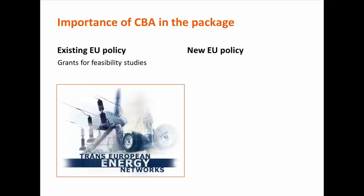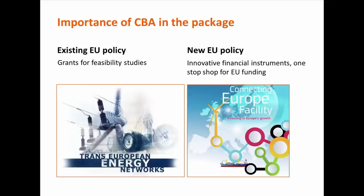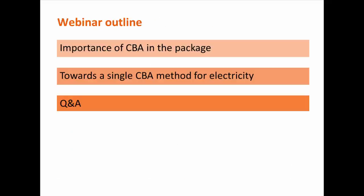The existing EU policy also included EU funding for priority projects. In the past we had mainly grants for feasibility studies, about 200 million per year. In the new policy we will have the Connecting Europe Facility, which includes not only more money — we are talking about an order of magnitude of billions over the period 2014 to 2020 — but also new innovative financial instruments, including a project bonds initiative, and a one-stop shop for EU funding. Clearly, cost-benefit analysis is very important in this package, so it is also very important that we have a good method for doing this CBA.